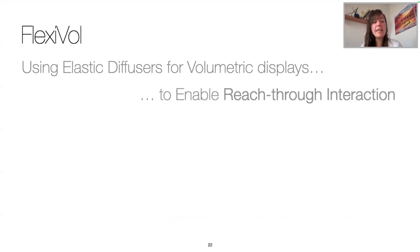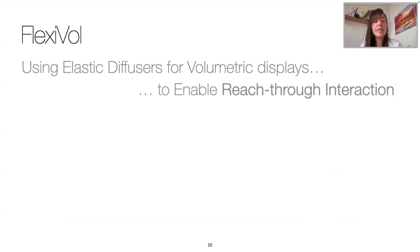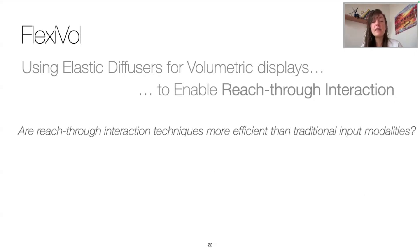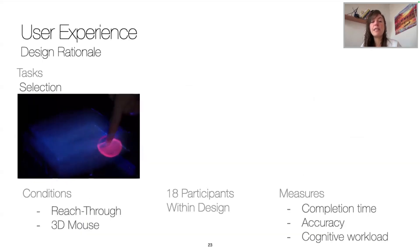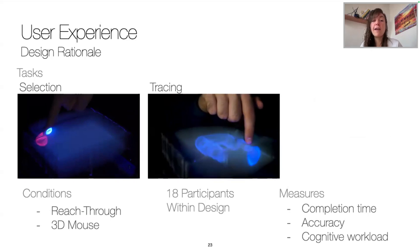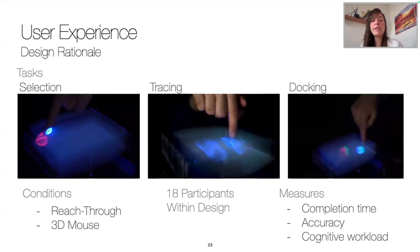Now to validate FlexiVol's concept, we conducted a user study to verify our reach-through interaction techniques more efficient than more traditional input modalities. So we chose to compare our techniques with a 3D mouse, which is the traditional input modality in volumetric display. So we gathered both quantitative and qualitative feedback. The study was split into three tasks. First, selection, where users had to select spheres of different sizes. Second, a tracing task, where they had to follow five circuits. And third, a docking task, where they had to fit small cubes into bigger ones.